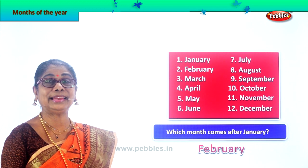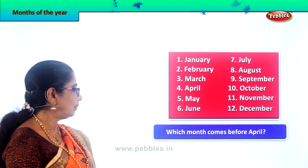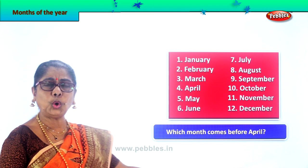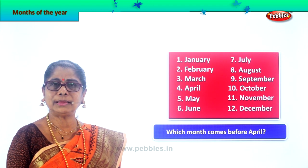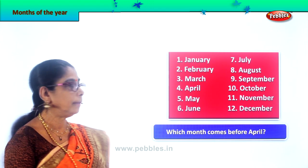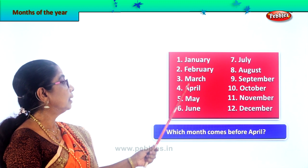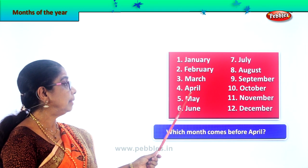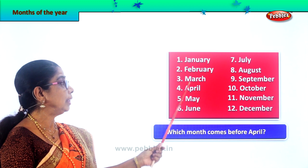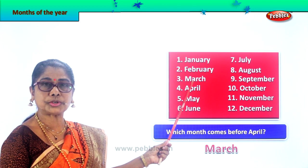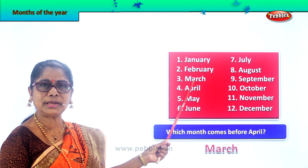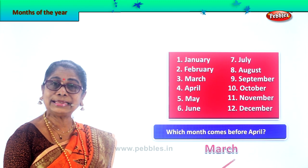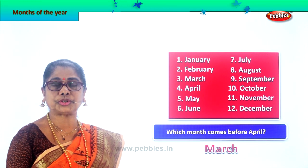Let's take another question. Which month comes before April? The month before April — January, February, March, April. The month before April is March — examination time! Spell March — M-A-R-C-H, March.